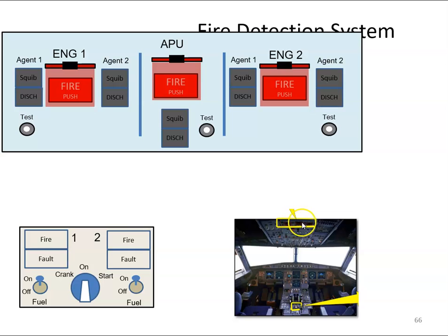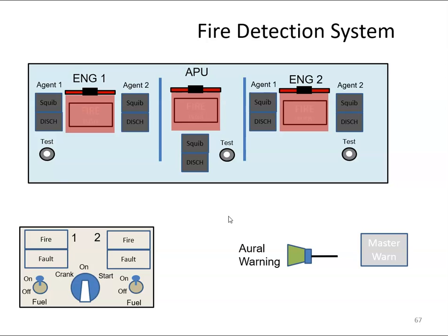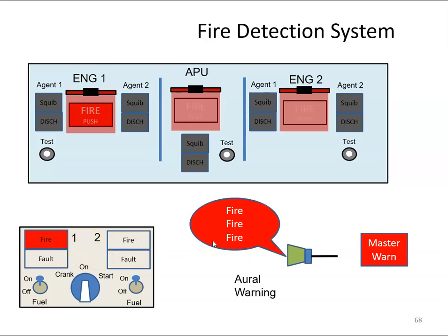Normally this is the overhead panel and this is the quadrant panel. If we get a fire in engine 1, for example, the red light here will illuminate. We'll also get a red light here in the quadrant panel, and we'll get an aural warning — it might be a continuous siren or it might be 'fire, fire, fire' — and we'll get a warning on the master enunciator panel.